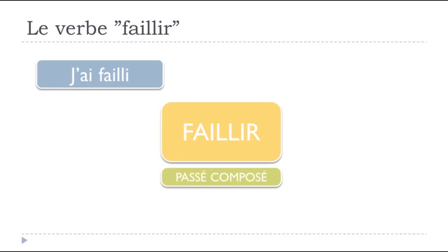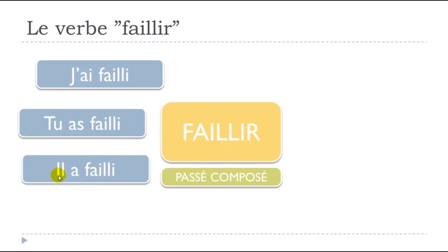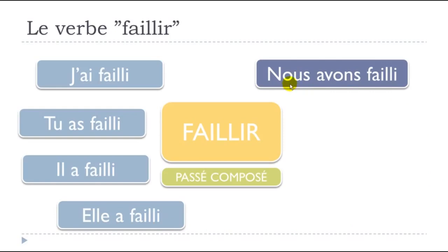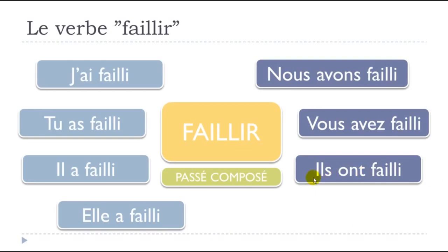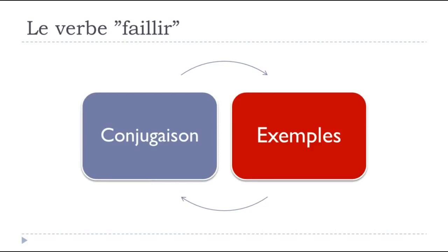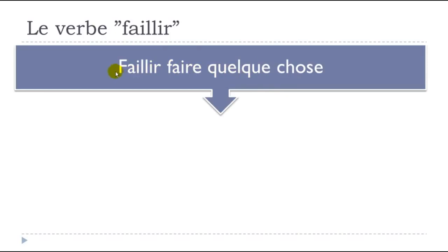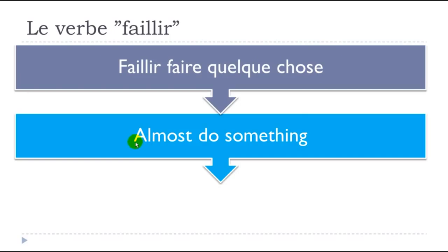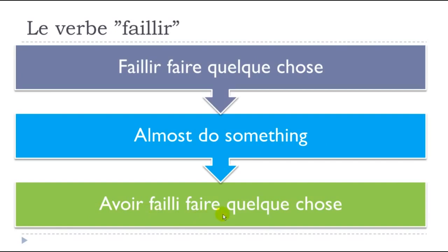Now let's see faillir in the passé composé form: j'ai failli, tu as failli, il a failli, elle a failli, nous avons failli, vous avez failli, ils ont failli, elles ont failli. These forms are the most used. You can see that you use avoir — like most verbs — and then the participe passé is failli.